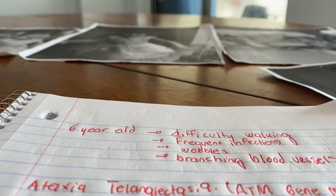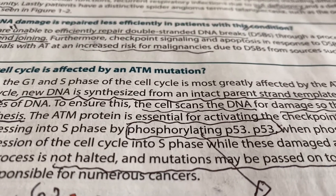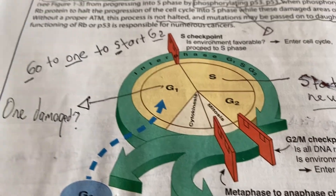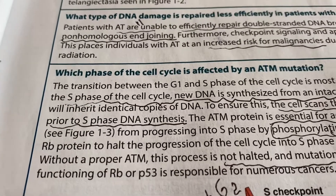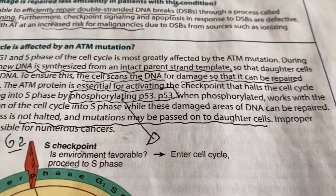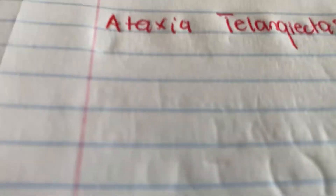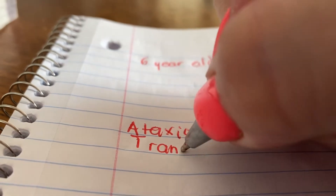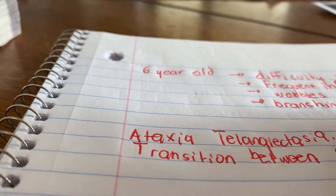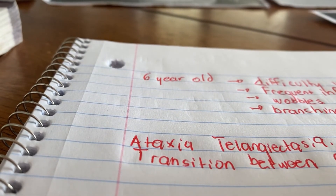The other question is: which phase of the cell cycle is affected by ATM mutation? Those are the cell cycle phases. The transition between G1 and S phase of the cell cycle is most greatly affected by ATM mutation. Transition between G1 and S phase of the cell cycle.